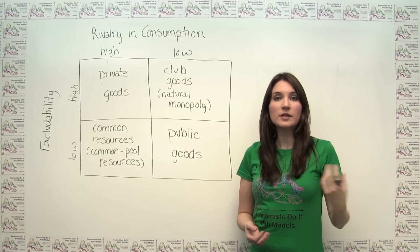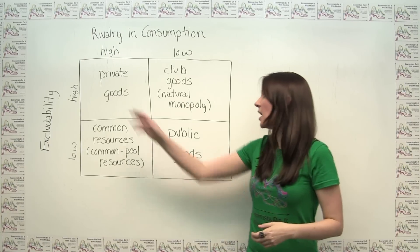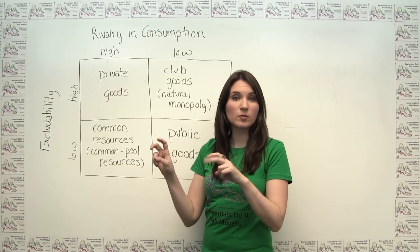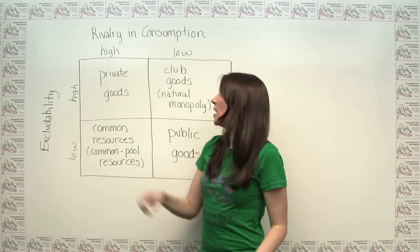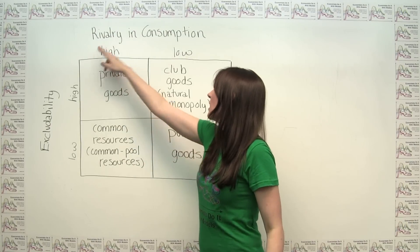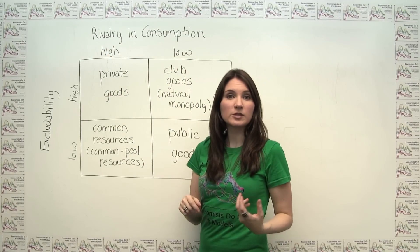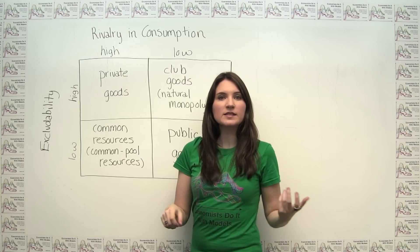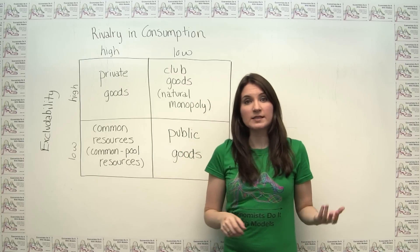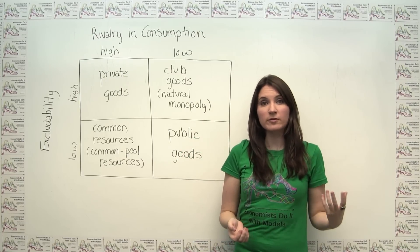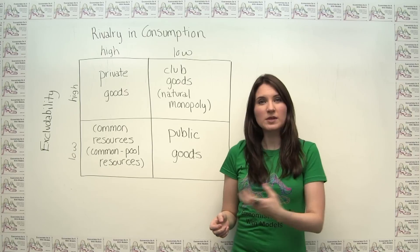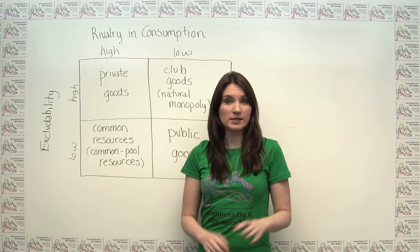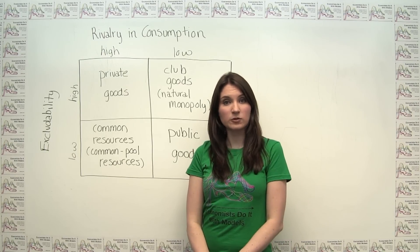Note in the diagram here that I used the labels high and low excludability rather than excludable and non-excludable, and the labels high and low rivalry in consumption rather than rival and non-rival. I did this to emphasize the idea that excludability and rivalry are not binary conditions, but instead there's a spectrum of behaviors that goods and services can exhibit in this regard.